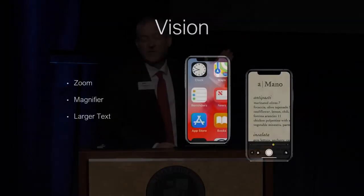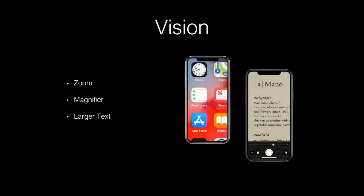Larger text: you can go into Accessibility and make all the text on your screen bigger — it's just like choosing a larger font. I think I'm up to about halfway now and it just makes it easier to see everything on the screen.